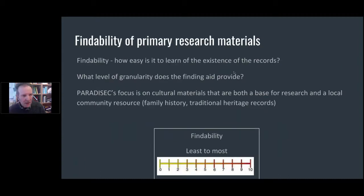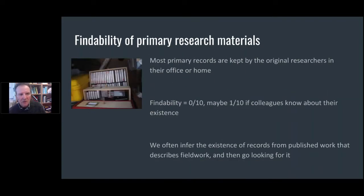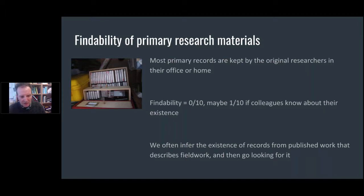When we talk about findability, we can talk about granularity of finding. We can find collections and items, and we should be able to drill down to find things we're particularly interested in. We can characterise findability on a scale from 0 to 10. Primary research materials that people have in their offices or homes — typically the findability of those is about 0. A speaker of a language trying to locate recordings made with their grandparents is not going to be able to find that material.